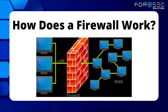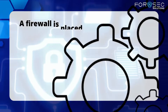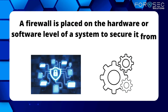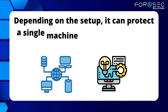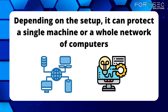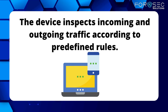Let's see how does a firewall work. A firewall is placed on the hardware or the software level of a system to secure it from malicious traffic. Depending on the setup, it can protect a single machine or a whole network of computers. The device inspects incoming and outgoing traffic according to the predefined rules.